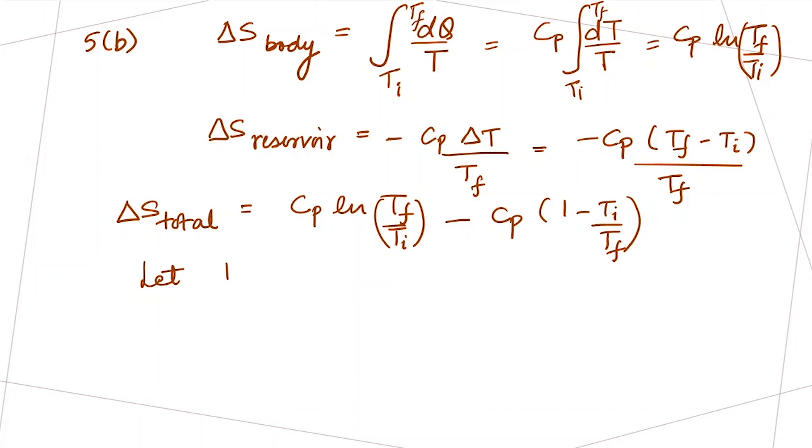Let this 1 minus TI by TF, this whole term, be P. So this TI over TF can be written as 1 minus P.